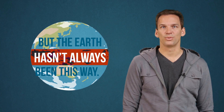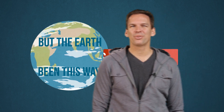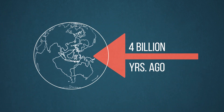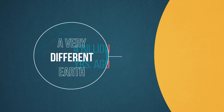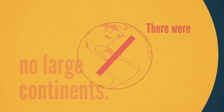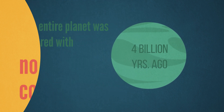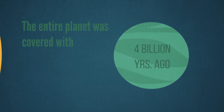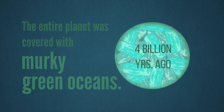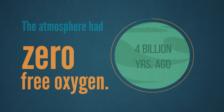But Earth hasn't always been this way. If you look back through Earth's history, roughly 4 billion years ago, it would look very different. The sun was 30% dimmer. There were no large continents. Virtually the entire planet was covered with murky green oceans and filled with bacteria. The atmosphere didn't have any free oxygen.